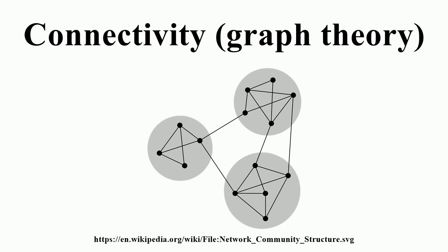A cut, vertex cut, or separating set of a connected graph G is a set of vertices whose removal renders G disconnected. The connectivity or vertex connectivity kappa is the size of a minimal vertex cut. A graph is called k-connected or k-vertex connected if its vertex connectivity is k or greater.